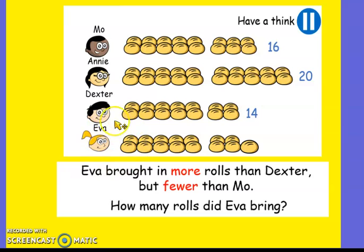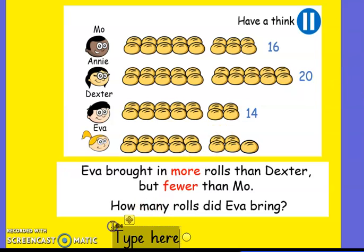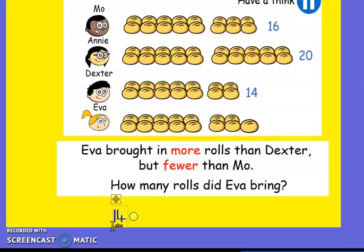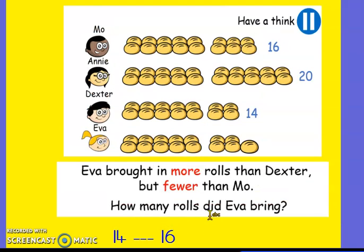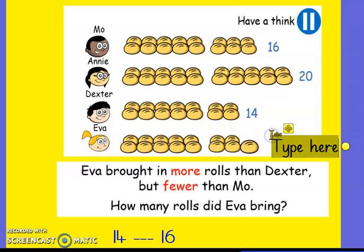Eva brought in more rolls than Dexter but fewer than Mo. So how many did Eva bring? She's got more rolls than Dexter but fewer than Mo — so she's got more than fourteen but less than sixteen. So she's got a number that's between fourteen and sixteen. What could that be? That's right, it's fifteen, isn't it? Let's check and count: two, four, six, eight, ten, eleven, twelve, thirteen, fourteen, fifteen. She's got fifteen rolls.